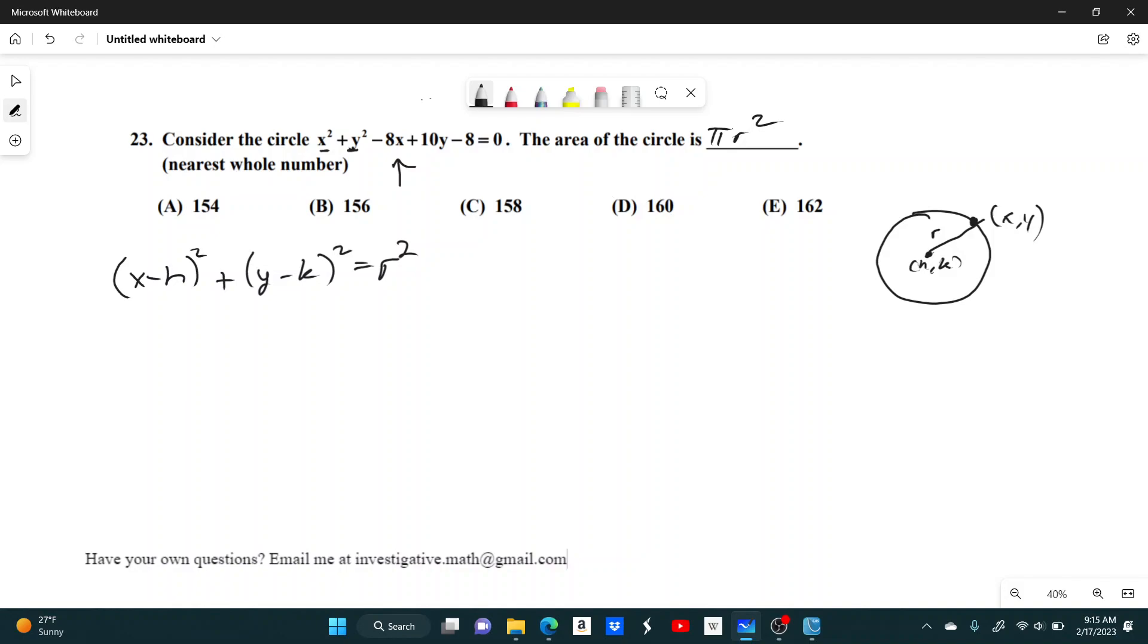So let's see. We're going to have to complete the square to get these. So I'm going to rearrange this a little bit just to make it easier to do. So we're going to get x squared minus 8x plus something plus y squared plus 10y plus something equals, and then I'll move the 8 over to the right-hand side. So it equals 8.